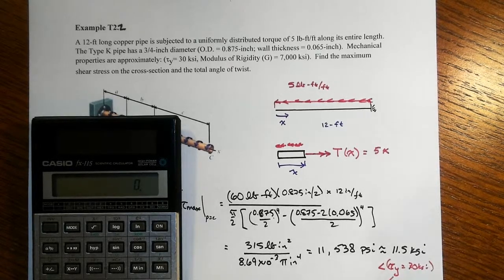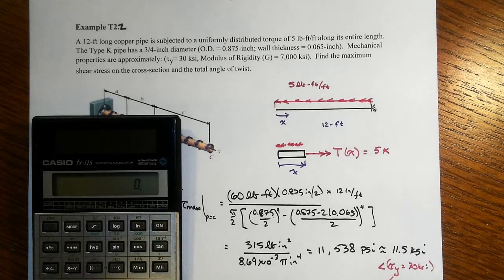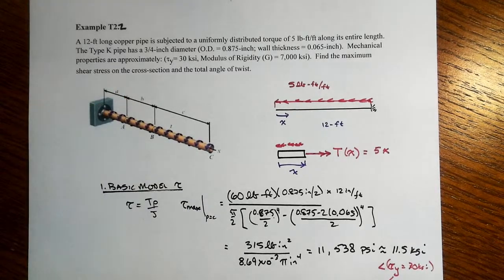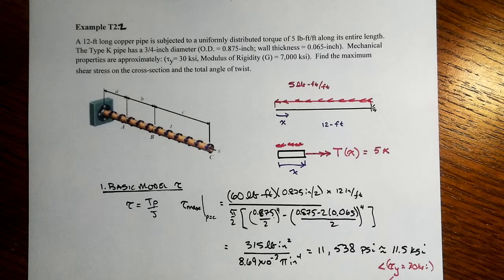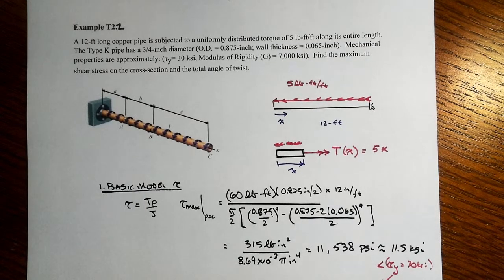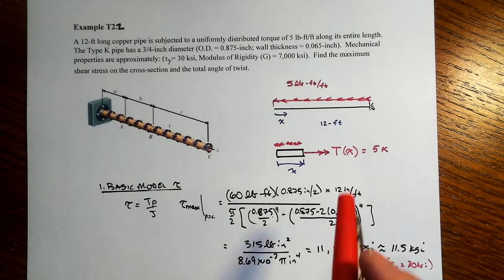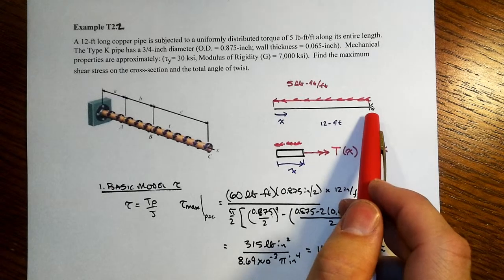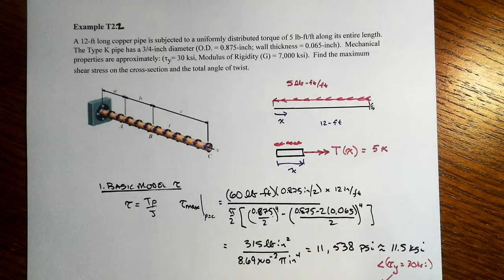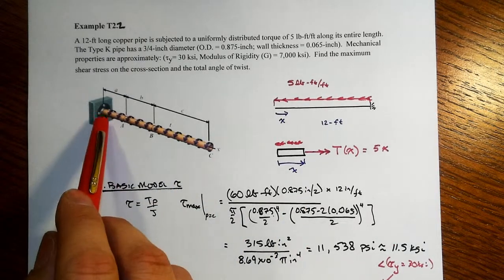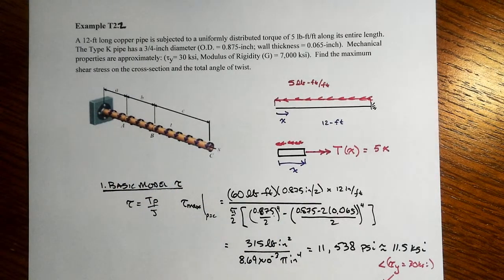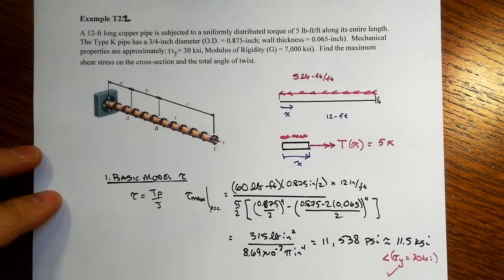That is less than the yield stress, which equals 30 ksi, so that's an elastically responding system. That was pretty straightforward — nothing particularly different. We just had to figure out by observation where the max torque was. And because J and c were constant along the length, we just went to the fixed end to find that maximum shear stress.